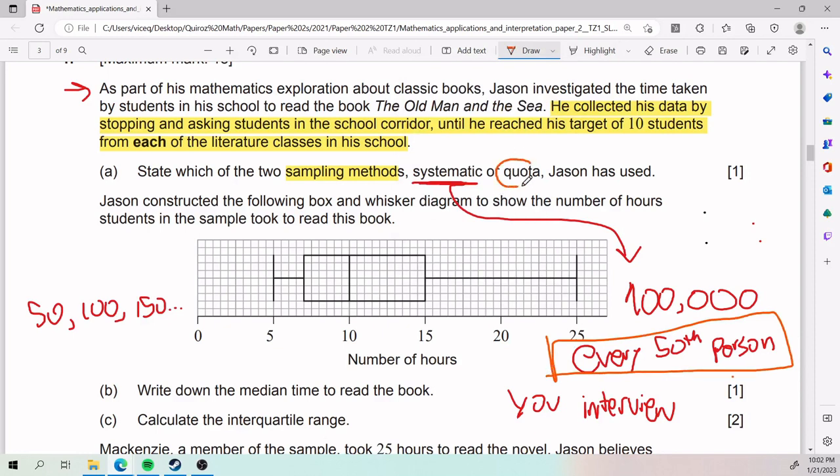On the other hand, quota would be like, of these 100,000, you sample or you interview the first 50. So then you would be doing person number one, person number two, person number three, until you reach 50. That is the difference between systematic or quota.